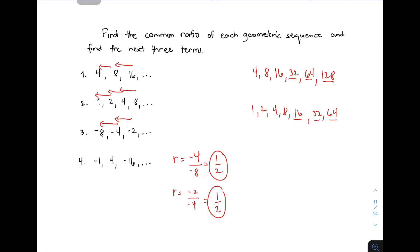How do we get the next three terms? You have -8, -4, -2. To find the fourth term, multiply a_3 (which is -2) by 1/2. This gives -2/2 = -1. The fourth term is -1. For the fifth term a_5, multiply -1 by 1/2, which gives -1/2. The fifth term is -1/2.